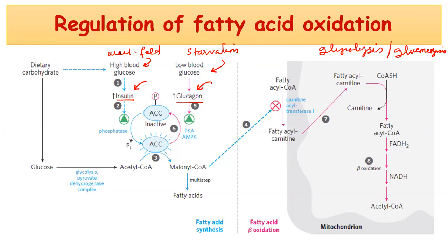So the first step involves insulin. When your blood glucose level is high, the pancreas releases insulin. Insulin then activates certain phosphatases within the body.